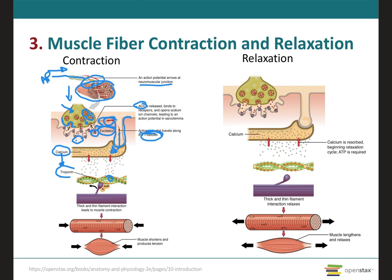In summary, once the thick filament and the thin filament are able to connect, this causes a muscle contraction — a shortening of the muscle fiber that produces tension. This also requires a molecule of ATP because it requires energy. For muscle relaxation to occur, the two things that cause contraction need to be removed: calcium and ATP. Calcium must be reuptaken into the T-tubules, and ATP is required to release the myosin head from the myosin binding site on the actin filament.